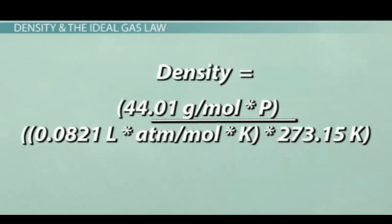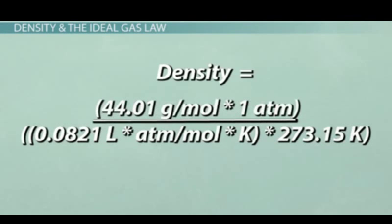R is 0.0821 liters times atm divided by moles times kelvin. T is 273.15 kelvin. P is 1 atm or atmosphere. Note that the temperature in this equation must be kelvin.